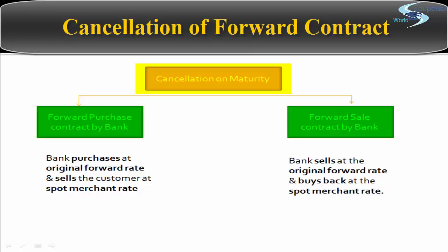Similarly, if the bank has entered into a forward sale contract, the bank will sell at the original forward rate. The bank computes the loss as if the transaction had actually occurred. Since the contract has not been fulfilled, the bank has to buy or sell at the spot merchant rate. Whatever loss the bank incurs because it has to buy or sell at the spot rate is recovered from the customer. If there is a forward sale contract, the bank sells at the forward rate, but since the obligation was not met, the bank buys back at the spot merchant rate. Any loss is recovered from the customer, but if there is a profit, nothing is recovered and nothing is paid to the customer.